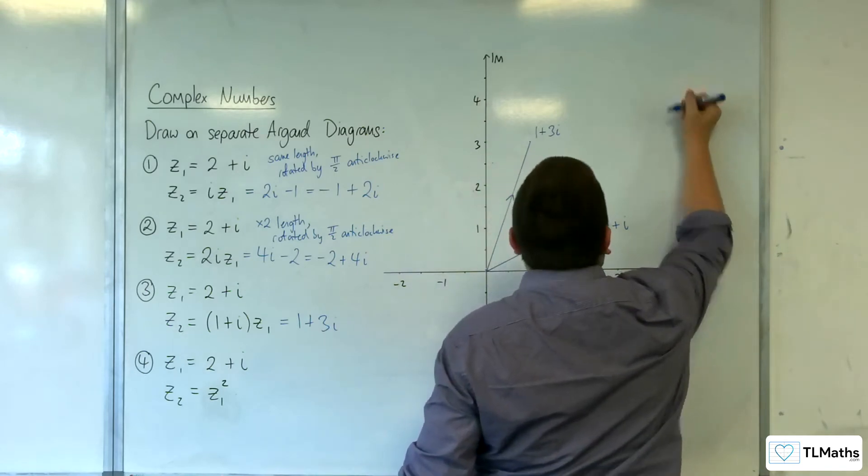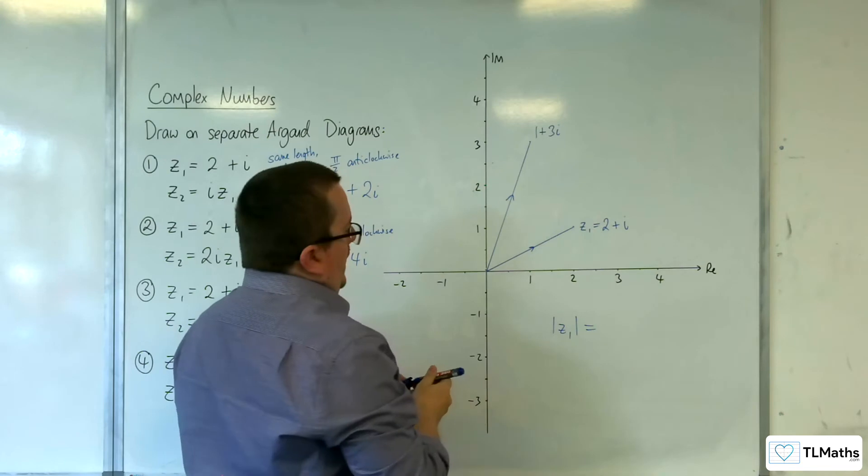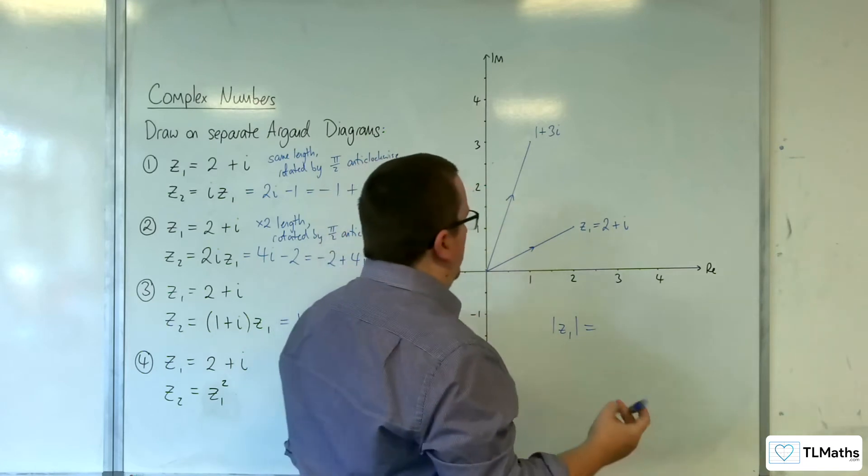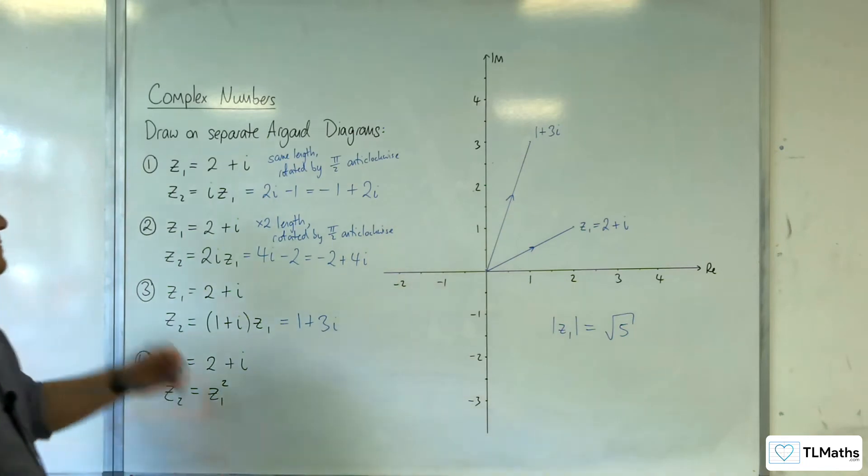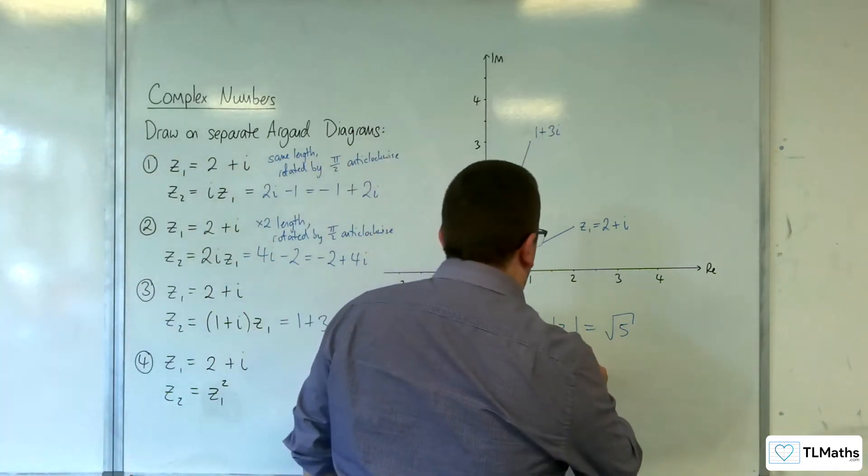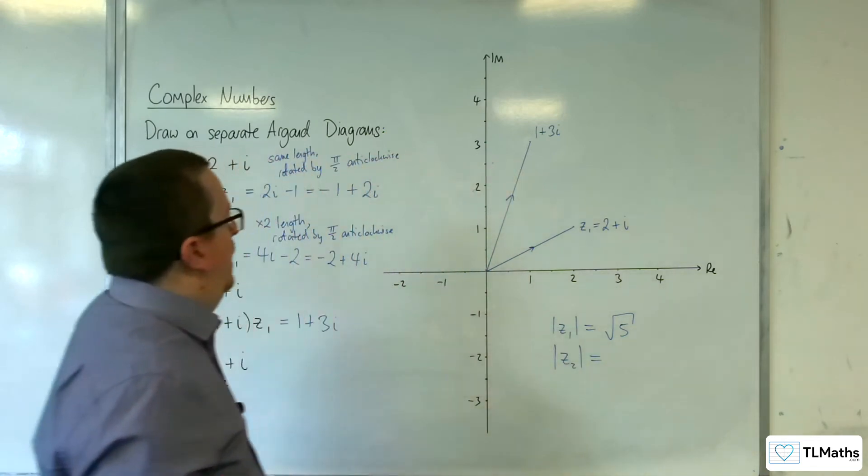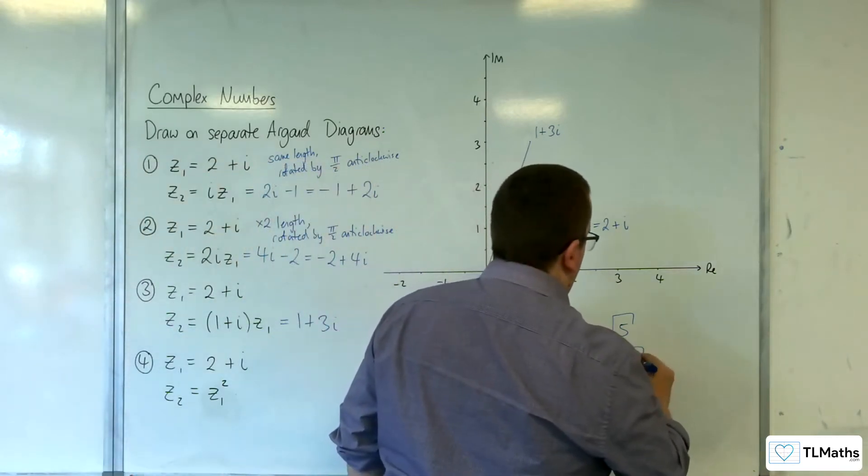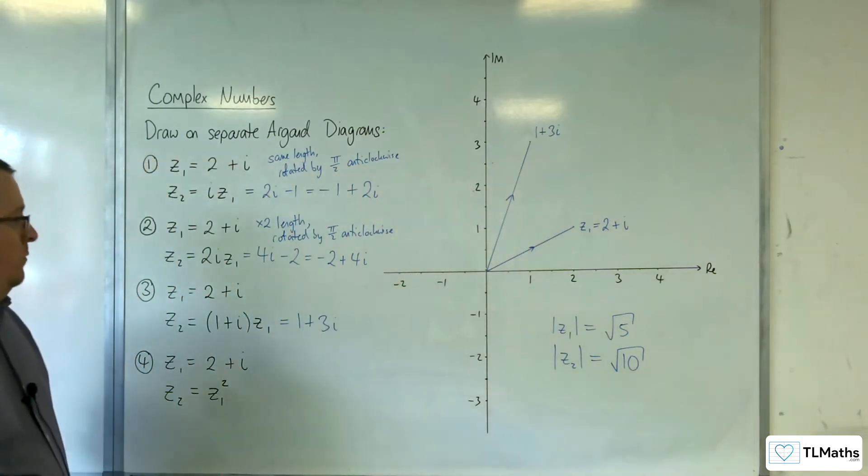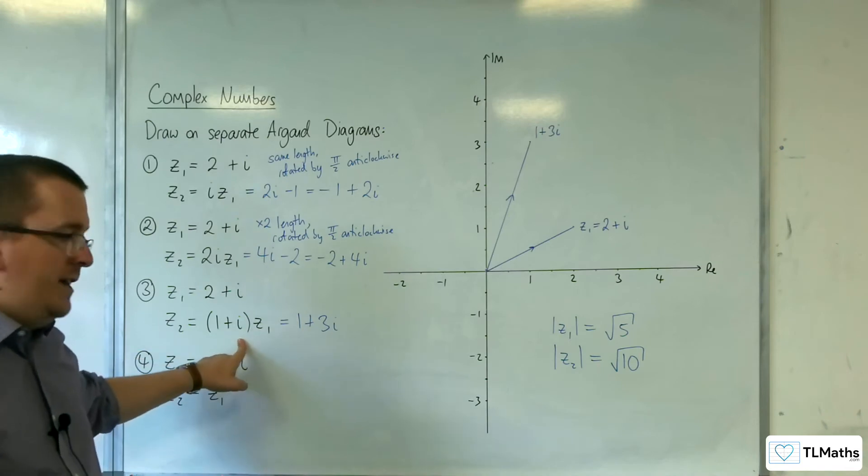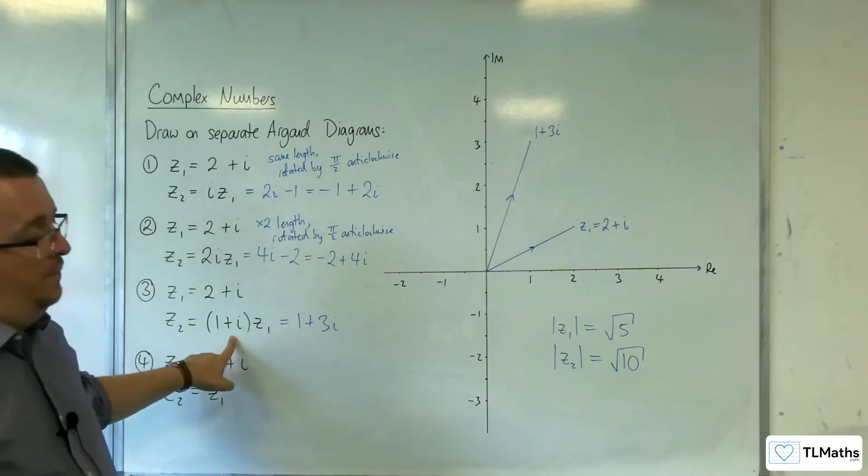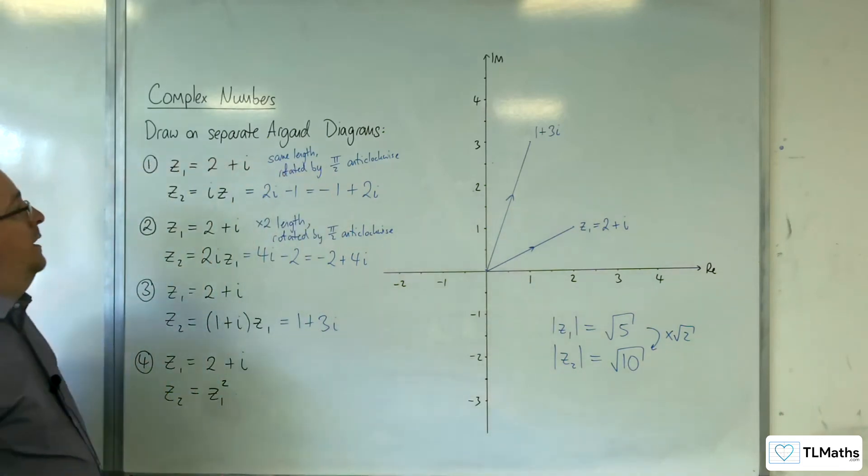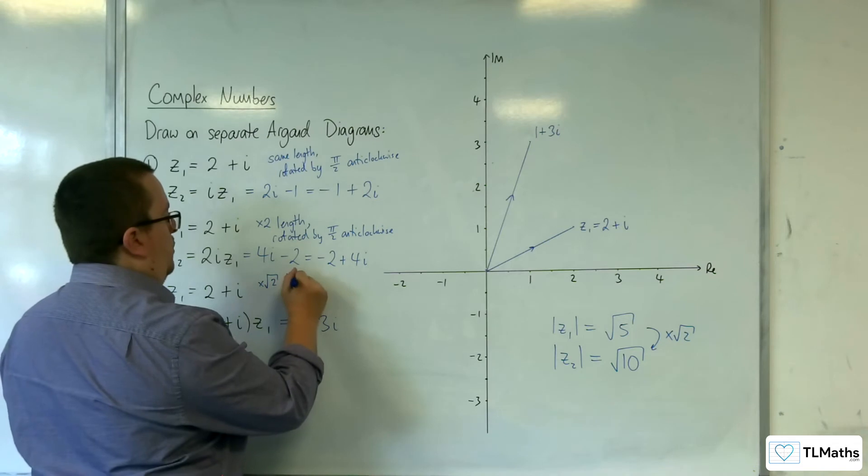The length of z₁ is 2 squared plus 1 squared, so that's root 5. And now we've got the length of z₂ of 1 plus 3i is the square root of 1 plus 3 squared, so root 10. Now what was the length of 1 plus i that we multiplied it by? That's got a length of root 2. And how do you get from root 5 to root 10? You multiply by root 2. So we've multiplied by root 2 in length.